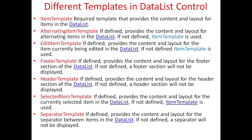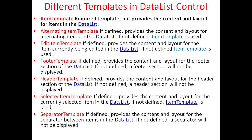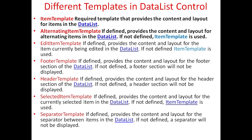There are different templates in DataList controls. First is the Item Template, which is a required template that provides the content and layout for items in the data list. The Alternating Item Template, if defined, provides the content and layout for alternating items in the data list. If not defined, the Item Template is used.